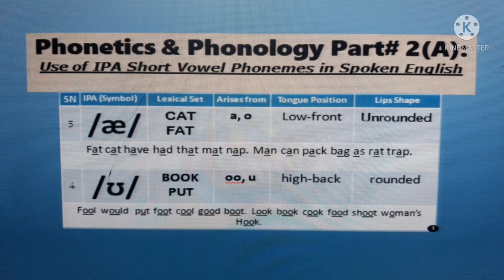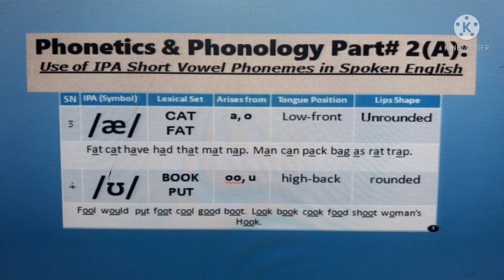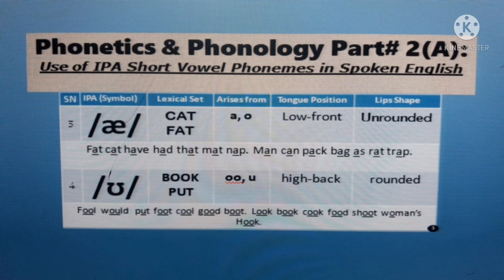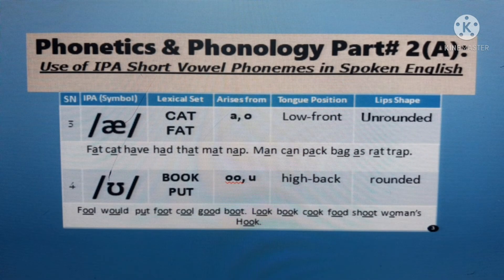In expressions with /æ/: pet, cat, have, had, that, mat, nap — pet, cat, have, had, that, cat, nap. Men can pack back as red trap. Men can pack back as red trap. /æ/ /æ/ /æ/.